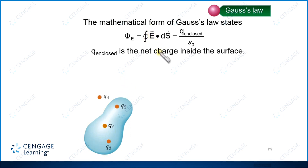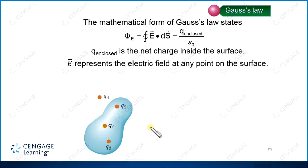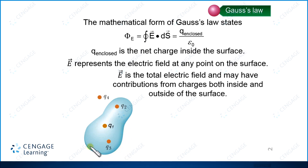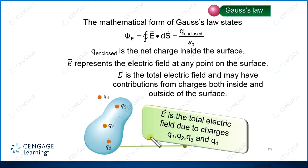The electric field vector E represents the total electric field at any point on the surface. It is very important to note that E is the total field and may have contributions from charges both inside and outside the surface. So in this diagram, the net electric field at any point on the closed surface will have contributions from q1, q2, q3, as well as q4. Now let us move to some illustrations to learn the application of Gauss's law.